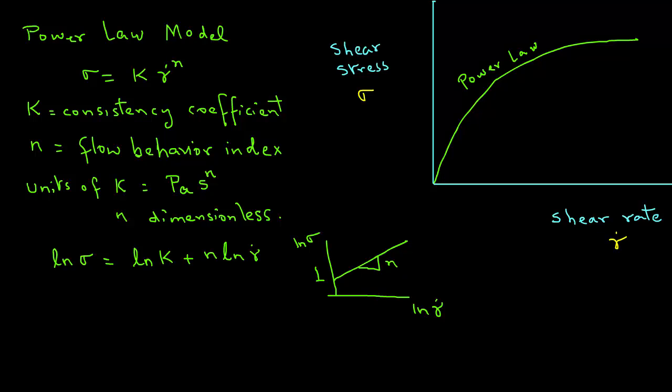The y-ordinate intercept will give us k, the value for the consistency coefficient, and the slope of that straight line will give us n or the flow behavior index.